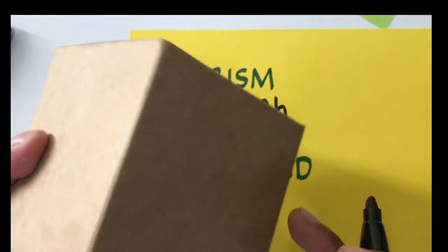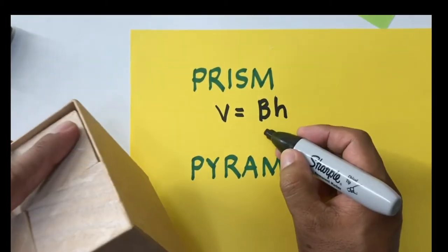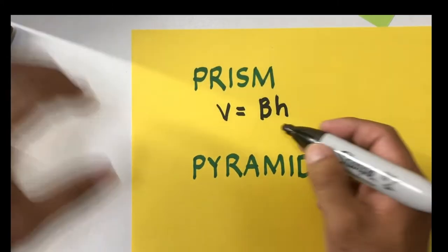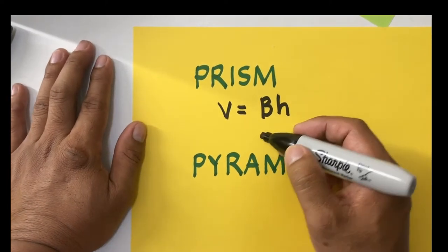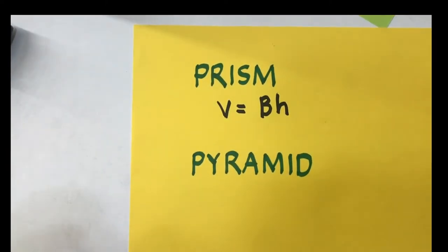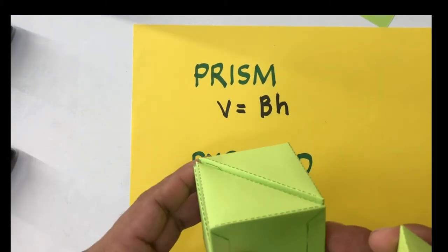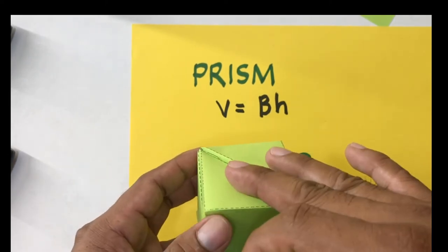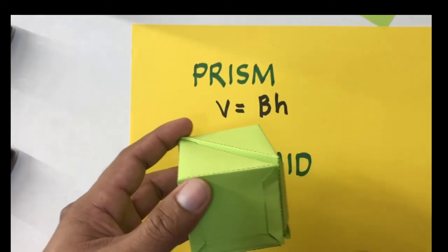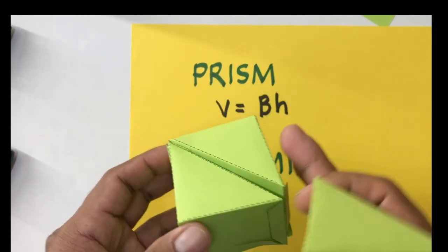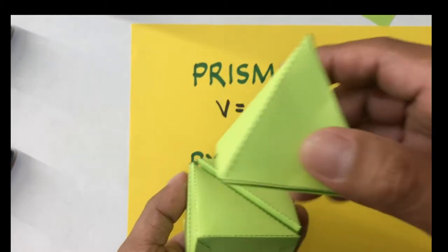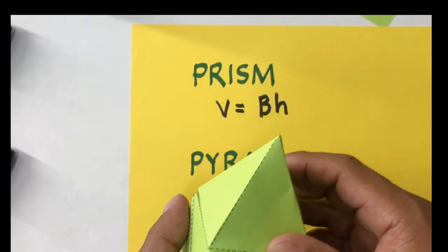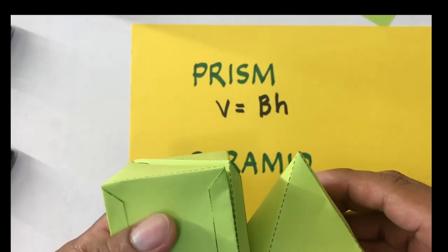For the prism, if the base is a square, the volume becomes side squared times the height. If you have a rectangular base, get the area of the rectangular base and multiply it by the height. Now, what if we have this scenario? I have this cube — which is a prism — and I have this pyramid that has the same base area as the cube and the same height as the cube. Is there any relationship between their volumes?